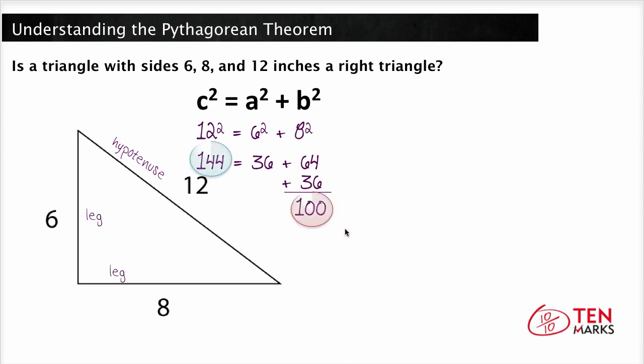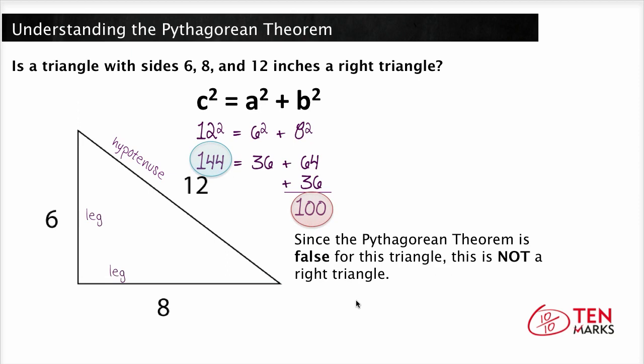144 does not equal 100. So since the Pythagorean Theorem is false for this triangle, this is not a right triangle. Great job, and I'll see you next time.